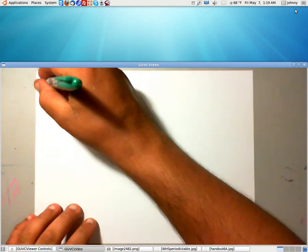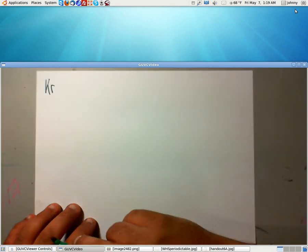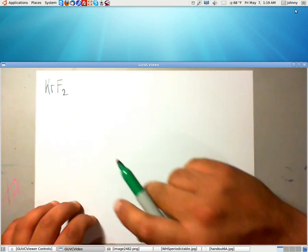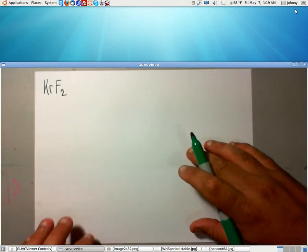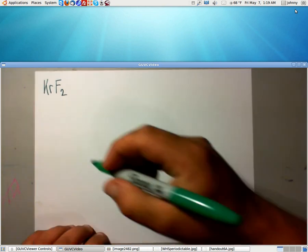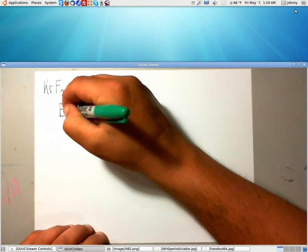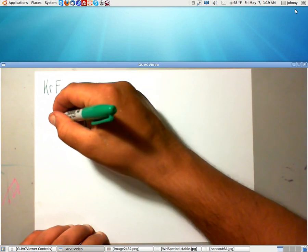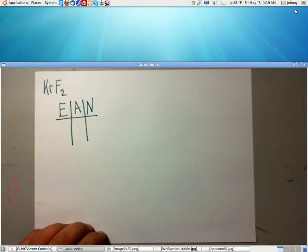The one that we'll be working with tonight will be KrF2, which is krypton difluoride. Let's go ahead and create the EAN chart: E, A, N. And remember you need a periodic table sheet and handout 6A.